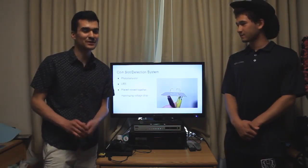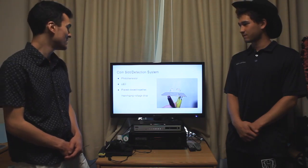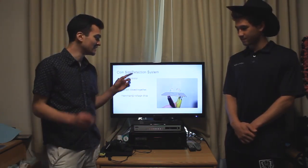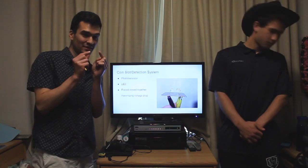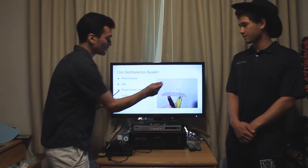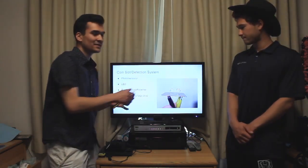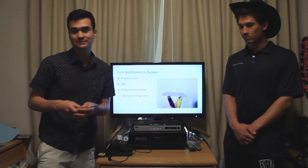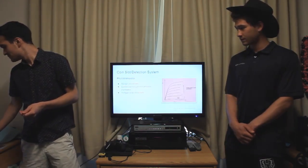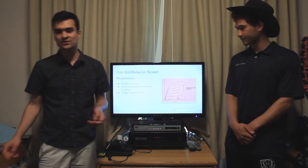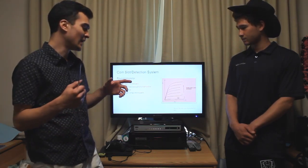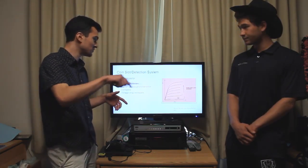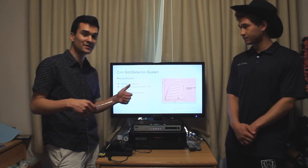Now let's talk about the implementation for the coin detection system. The idea was to use a phototransistor and an LED. We wanted to place them as close together as possible so that when a quarter passes through, the phototransistor will be able to register the high versus low voltage drop. The phototransistor works such that the more light you put onto it, the more easily current runs through it — current increases when more light hits it.